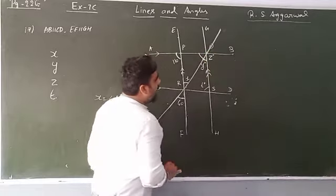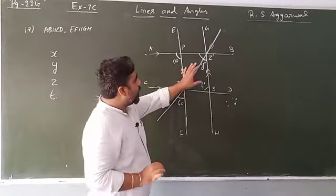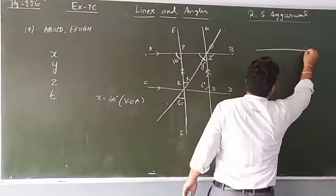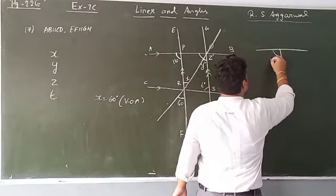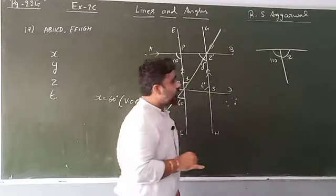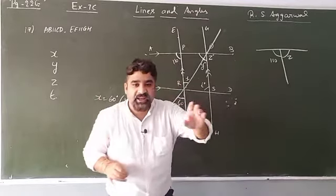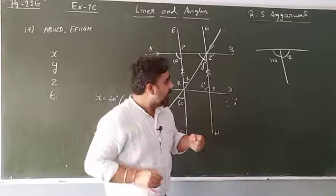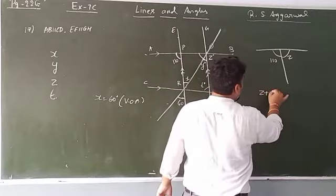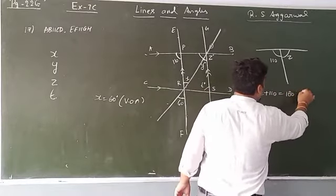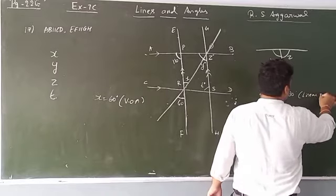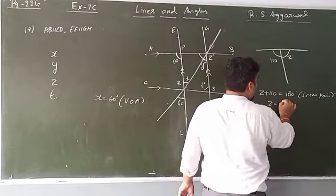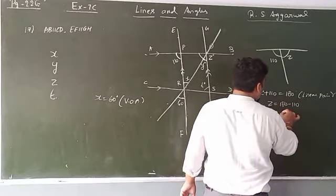This angle is 110. This angle is 110 as well. This is 110 and this is z. When a ray ends on a line, a linear pair is formed. The sum of adjacent angles in a linear pair equals 180 degrees. Therefore, z plus 110 equals 180 degrees — linear pair. So z equals 180 minus 110, therefore z equals 70 degrees.